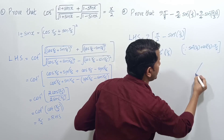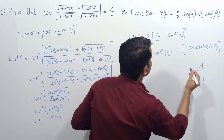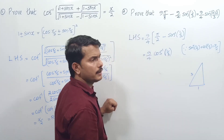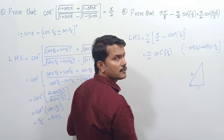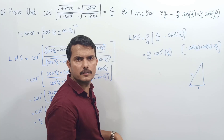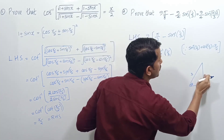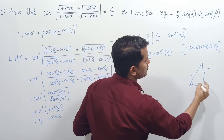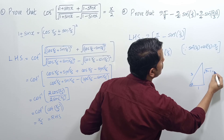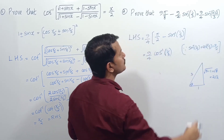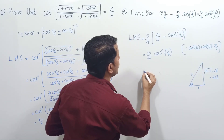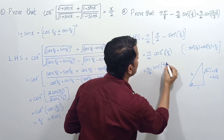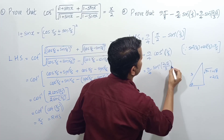For cos⁻¹(1/3), using a right-angle triangle: adjacent = 1, hypotenuse = 3. The opposite side = √(3²-1²) = √(9-1) = √8 = 2√2. So the angle equals sin⁻¹(opposite/hypotenuse) = sin⁻¹(2√2/3). Therefore LHS = (9/4)·sin⁻¹(2√2/3), which is our RHS.